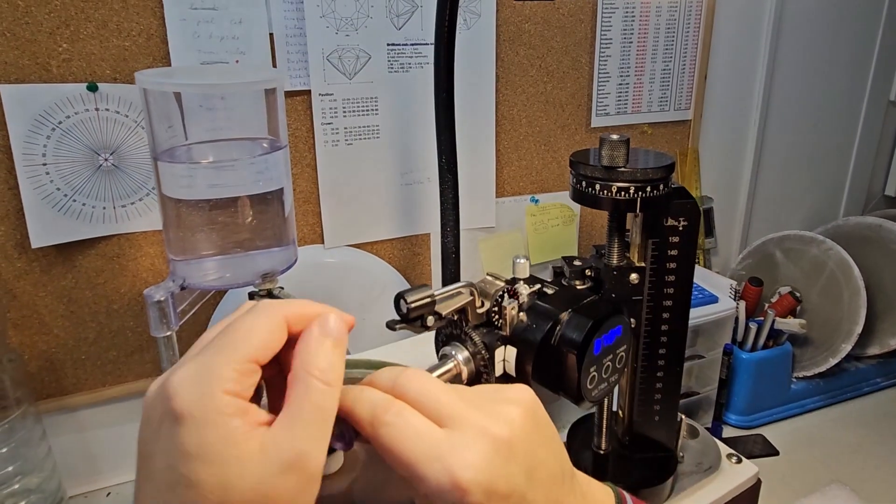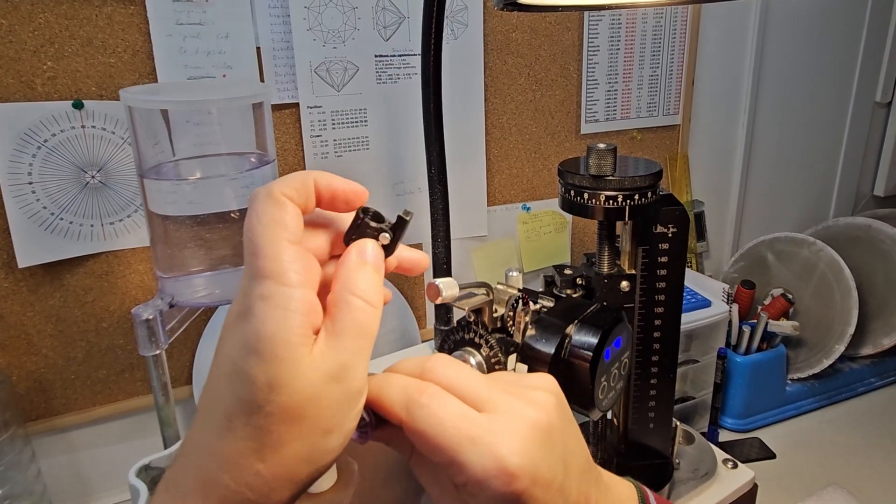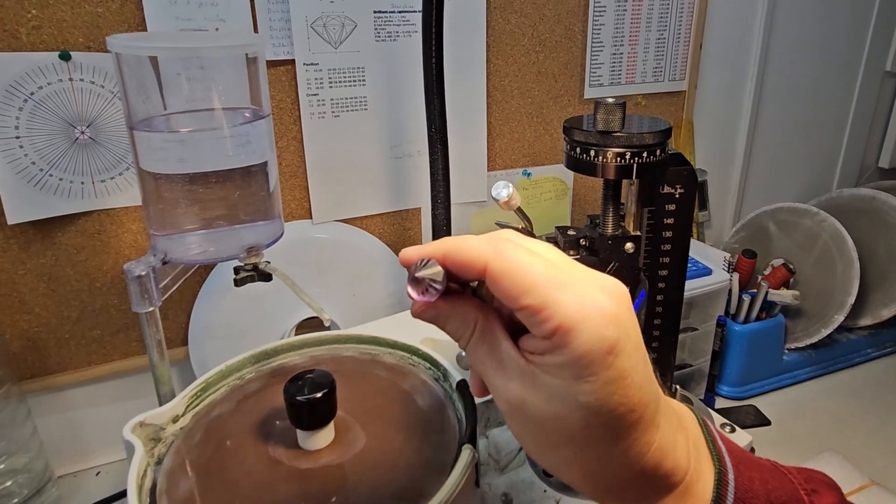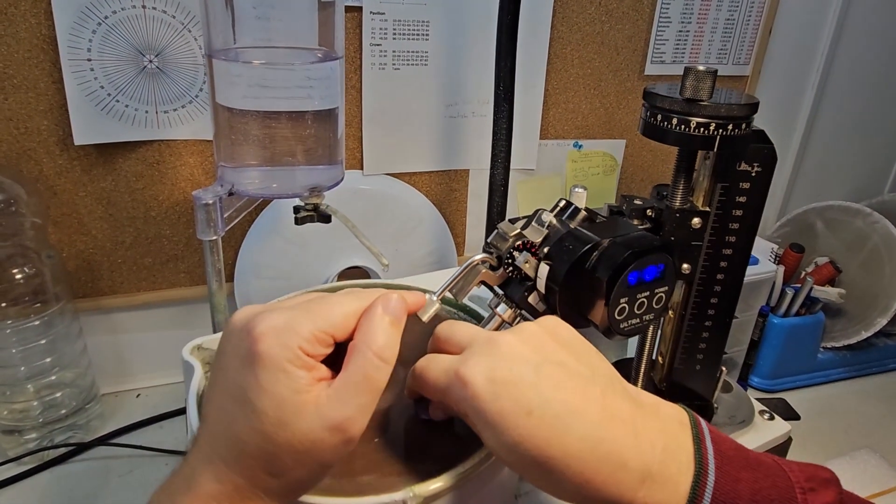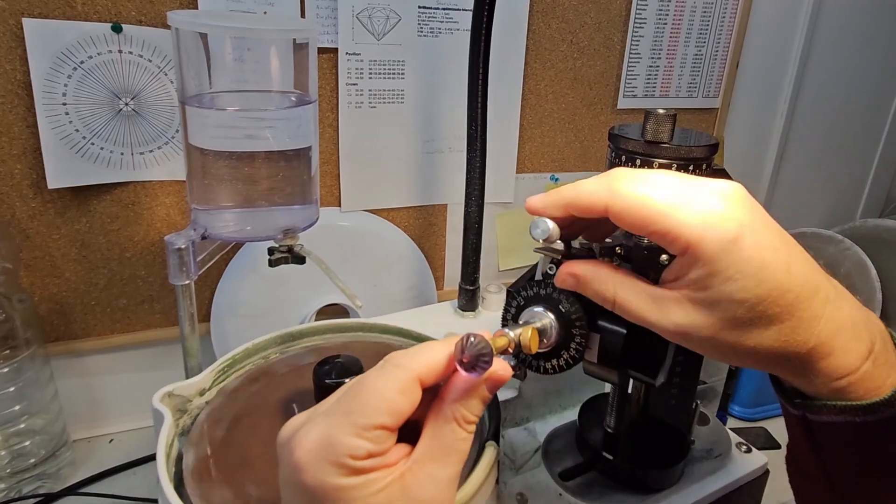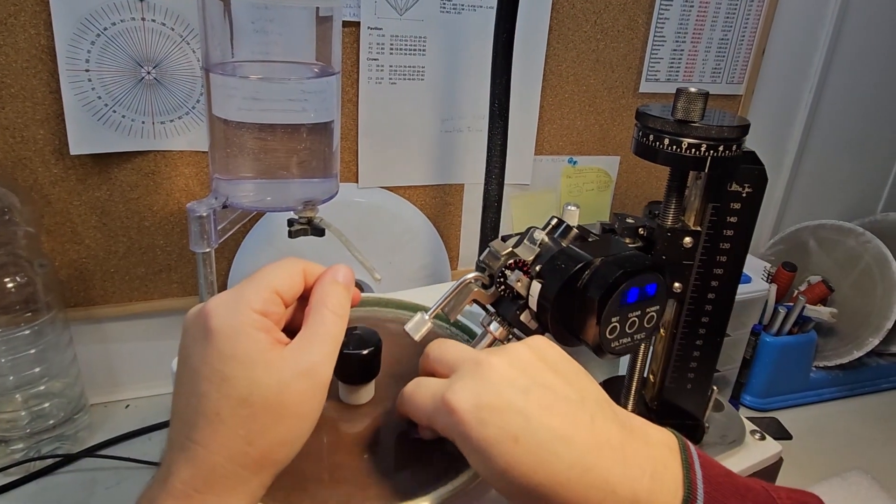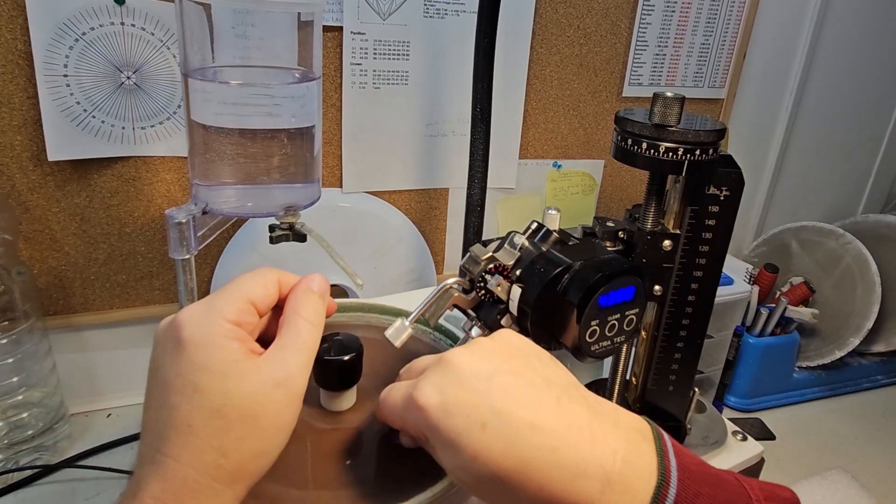Before I had this extra piece, when I was cutting with my fingers on the stone, changing indexes took me a bit longer. Let me show you how it worked before. I had to use my left hand to steady the quill, reposition my right hand, change the index, and then pick up the stone again.